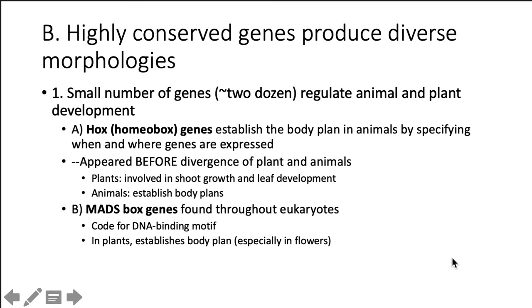Some genes are highly conserved and yet produce wide varieties of structures and morphologies. There are about two dozen genes that regulate animal and plant development — we call them hox genes or homeobox genes. Hox genes establish the body plan, such as ventral versus posterior axes, and appeared before plants and animals diverged. In plants, hox genes are involved in shoot growth and leaf development; in animals they establish body axes. MADS box genes are found throughout eukaryotes, code for DNA-binding motifs to turn on gene expression, and in plants establish the body plan, especially in angiosperm flowers.